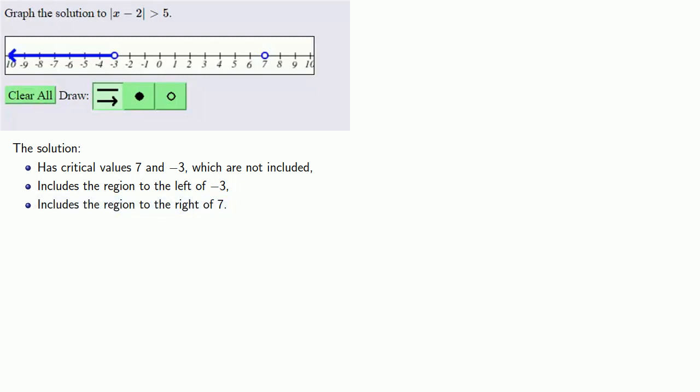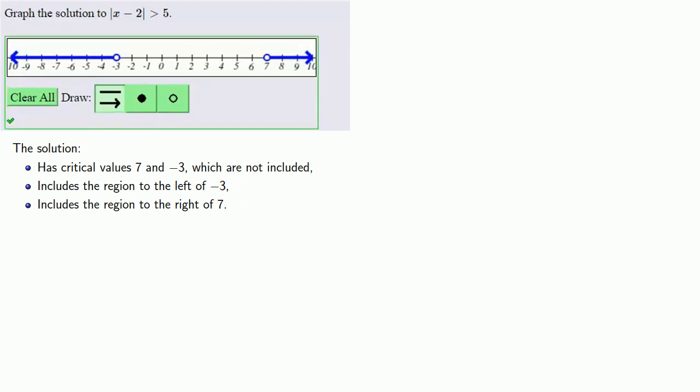We also want the region to the right of 7. Using our line tool, we'll start at 7 and go to the right. It's important to make sure we've gone far enough to get the right or left pointing arrow. We have, so we can submit and get our score.